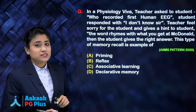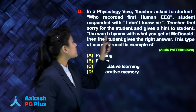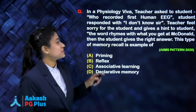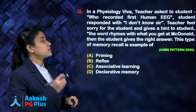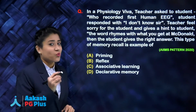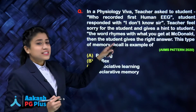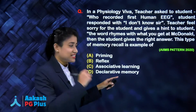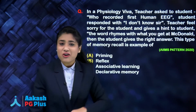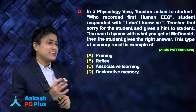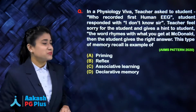The student responded with 'I don't know, sir.' The teacher felt sorry and gave a hint: the word rhymes with what you get in McDonald's. Then the student gave the right answer. This type of memory recall is an example of what? Let's look at memory first and then come back to this question.